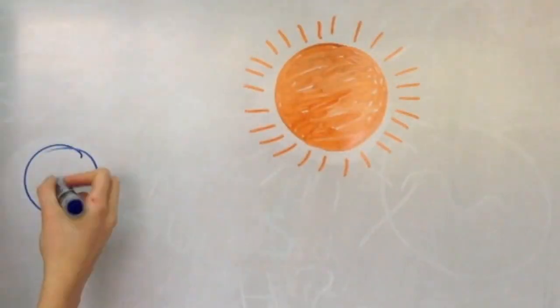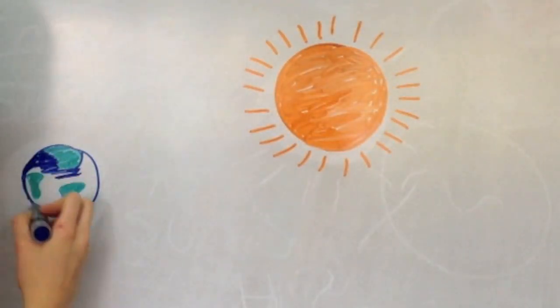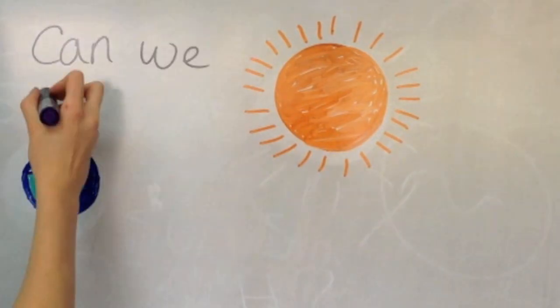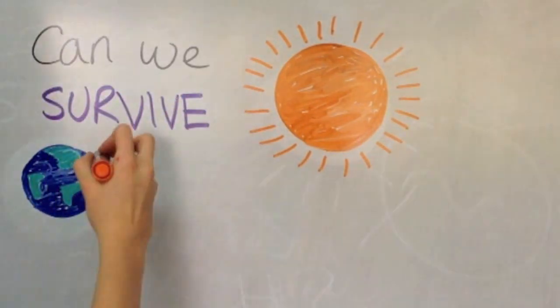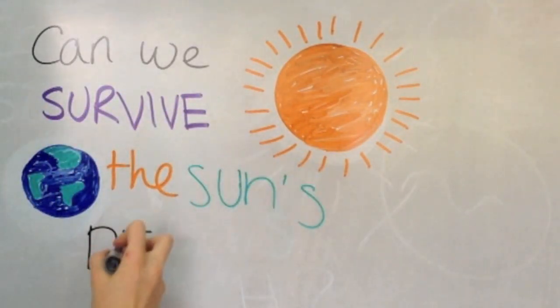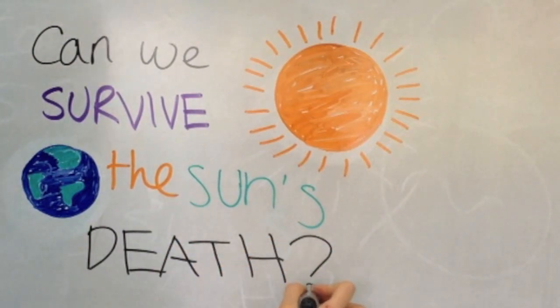The Sun is around 4.5 billion years old, and just like you and I, it's going to start aging. In approximately 1 billion years, the Sun will have expanded so much that it will melt away the Earth's surface. The question is, can we survive the Sun's death?